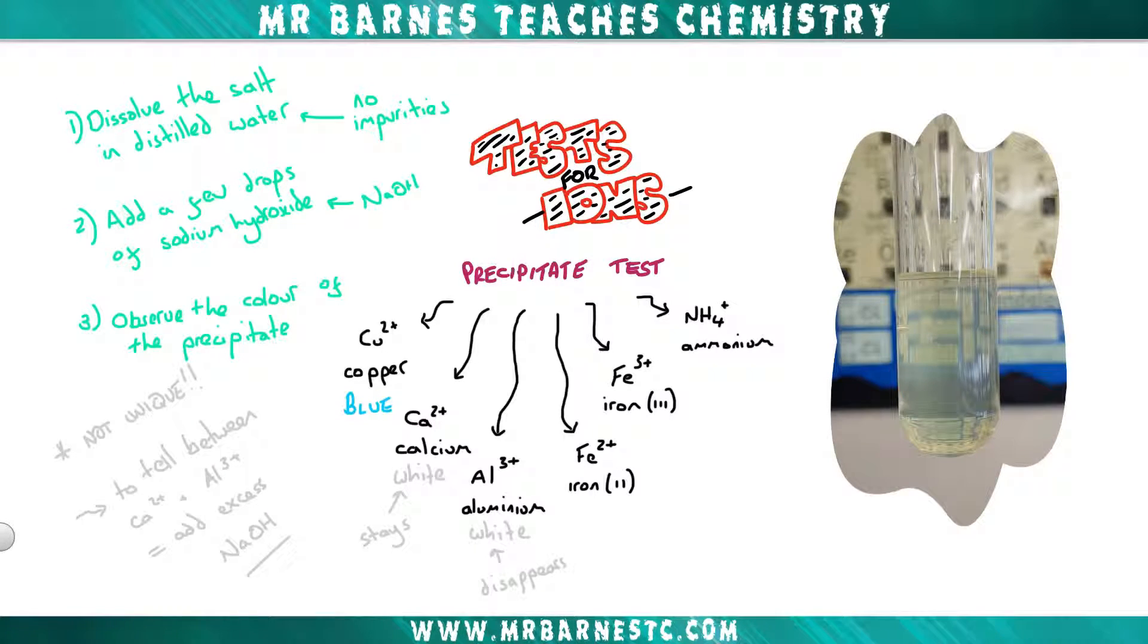If we move on to iron 2, you can see if we put sodium hydroxide into here, it makes a green precipitate.